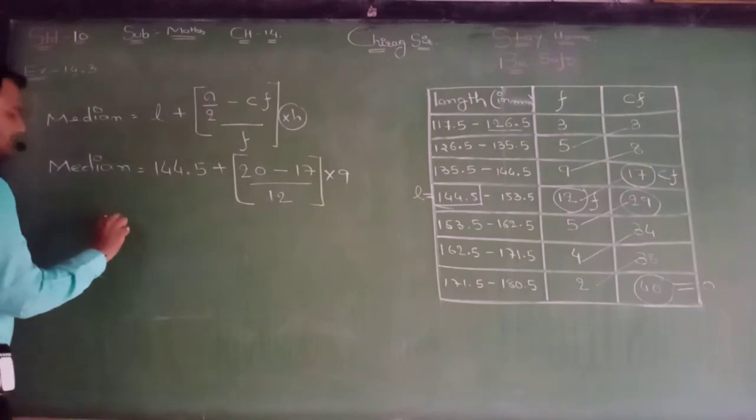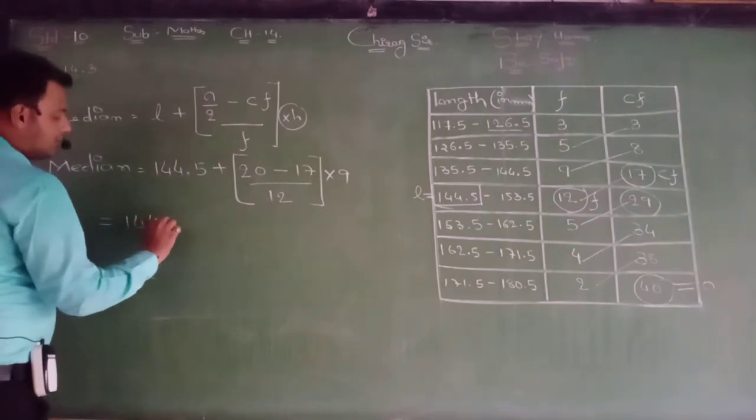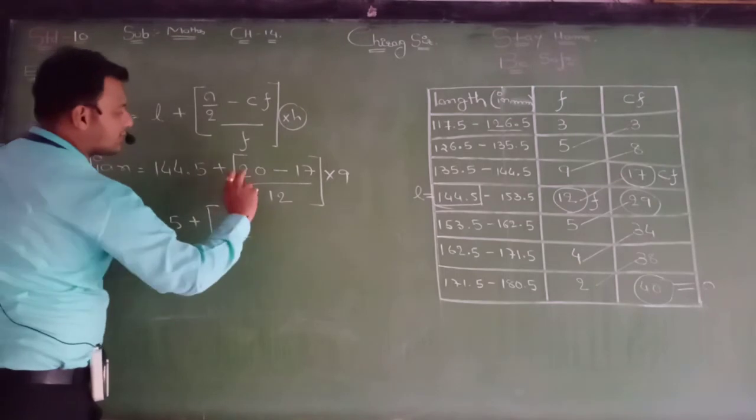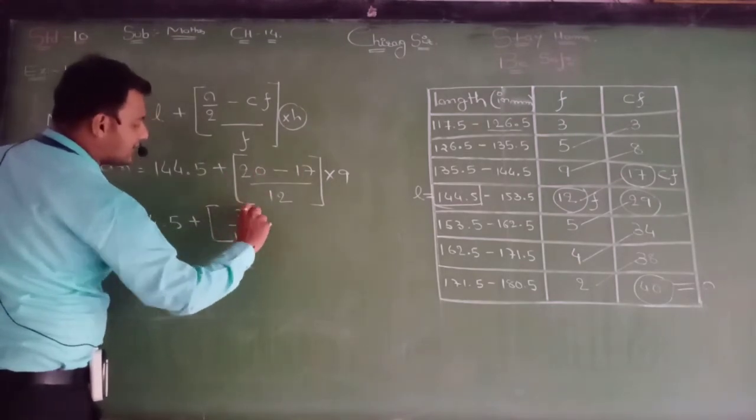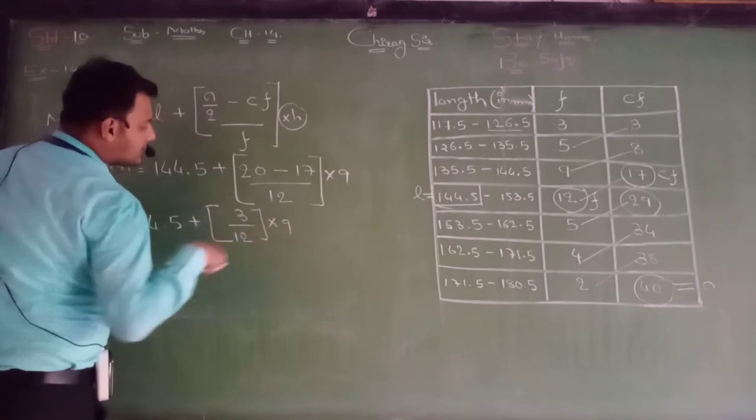Okay, see here. 144.5 plus 20 minus 17, that is 3, divided by 12, multiplied by 9.